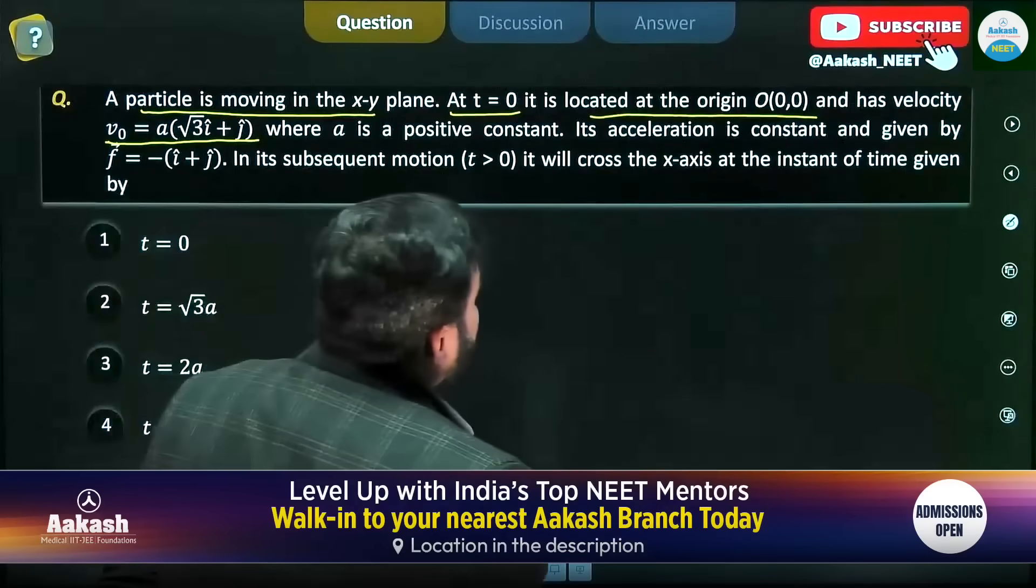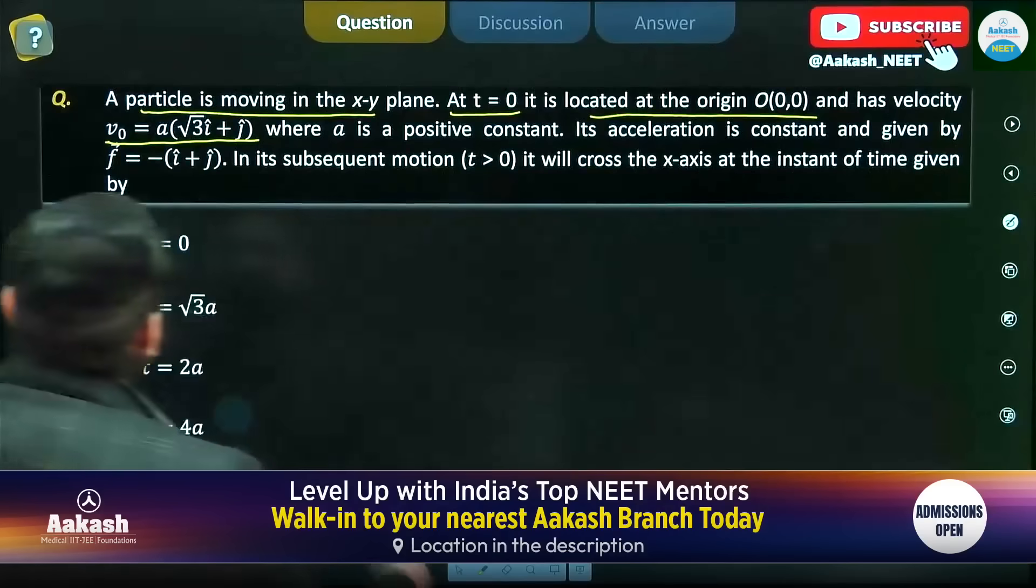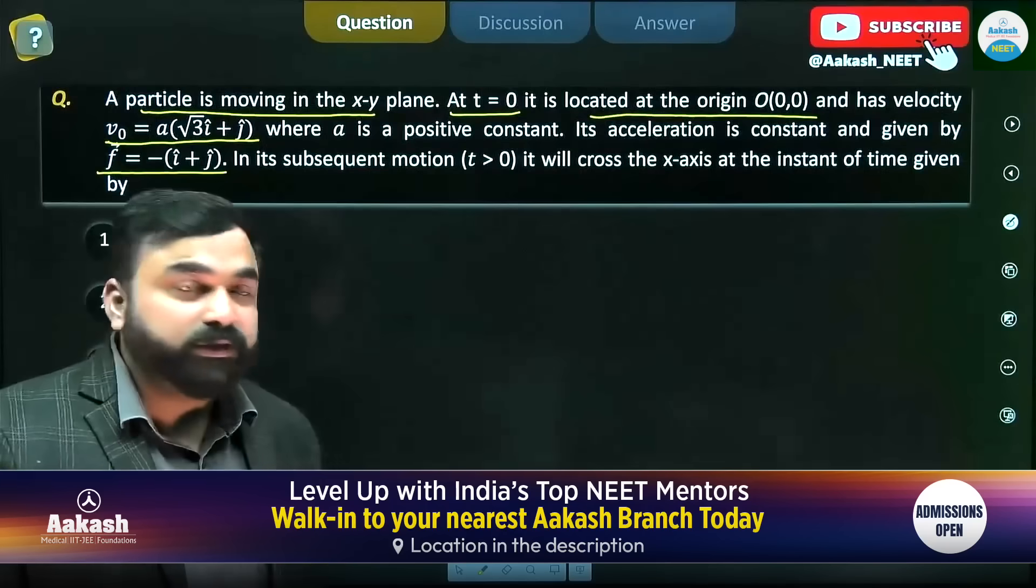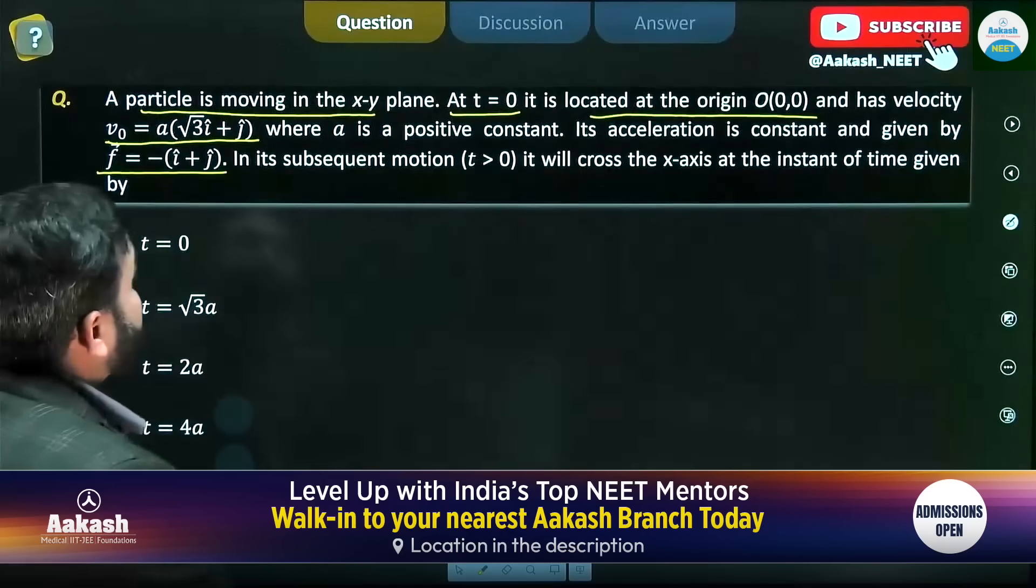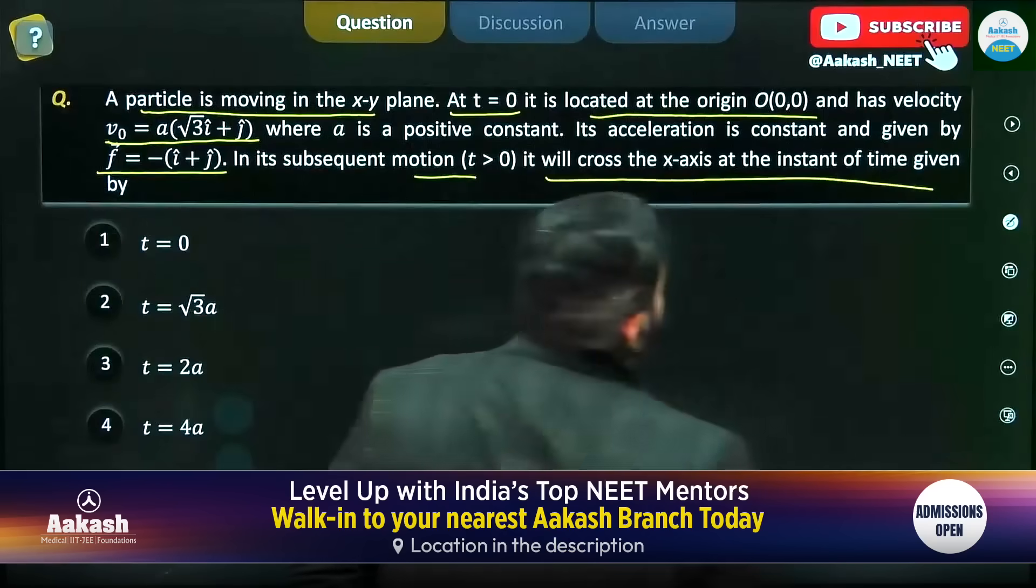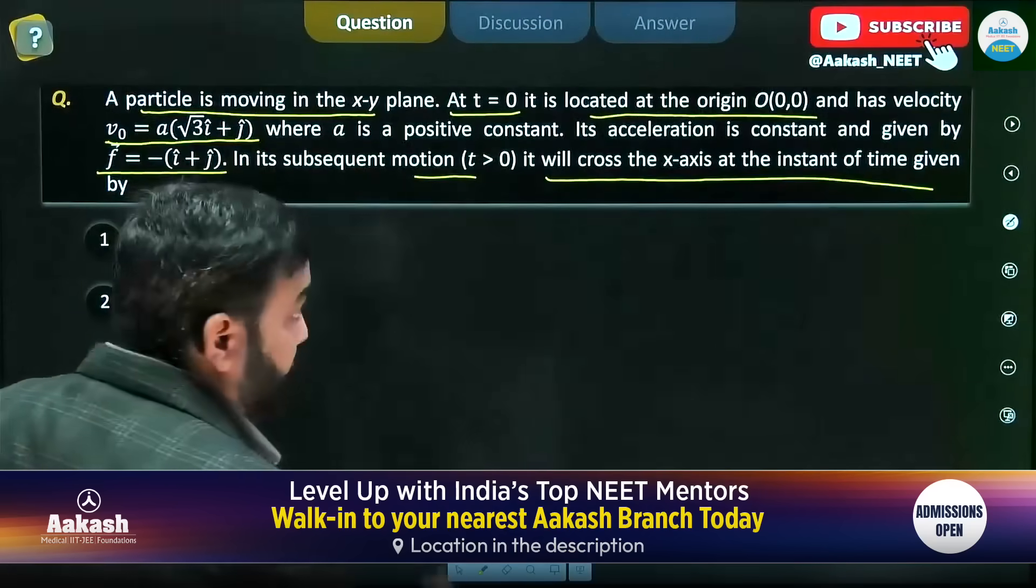Its acceleration is constant and is given by f = -(i + j). In its subsequent motion, it will cross the x-axis at the instant of time given by... we need to find this time.